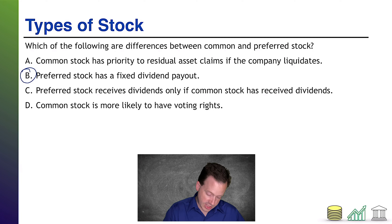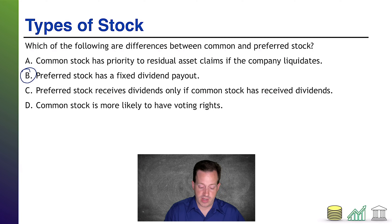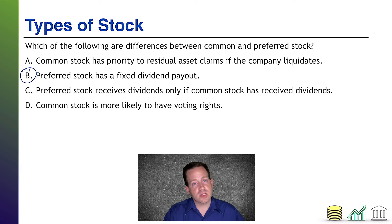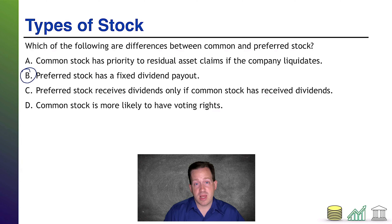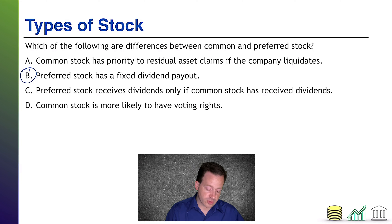Option C: preferred stock receives dividends only if the common stock has received dividends. Nope. Preferred stock has priority to dividends, so it could be the case that preferred shareholders get a dividend and common shareholders do not. The other way around would be pretty unusual.